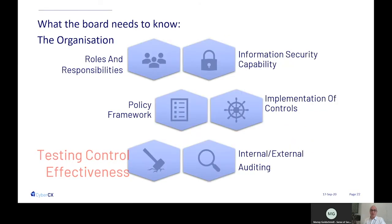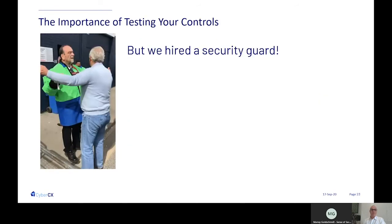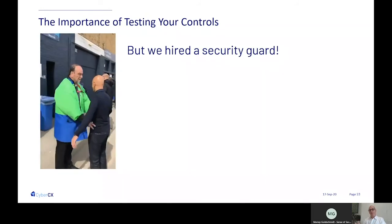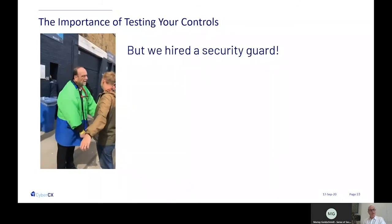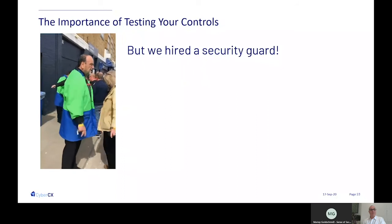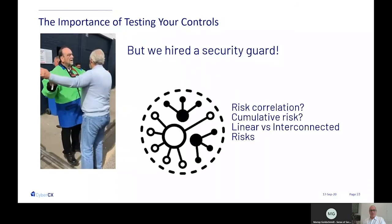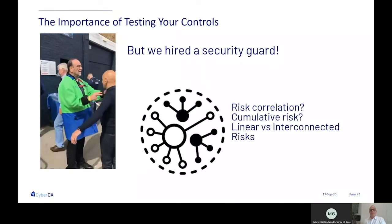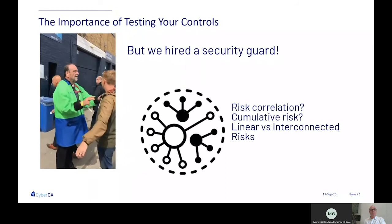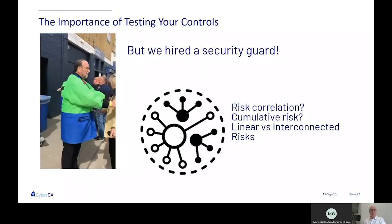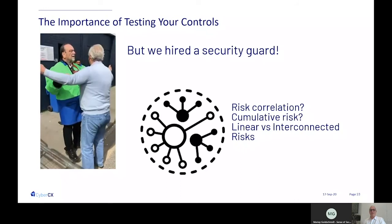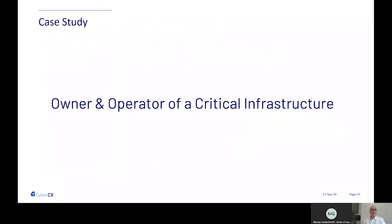Looking back at APRA requirements — they require testing the effectiveness of controls in place. Some people ask why, since they've already bought technology. But consider: did you actually hire a security guard who will identify issues? You have to understand all risks in your environment — the cumulative effect of risks, not risks in isolation, and interconnected risks, not treating all risks in a linear manner.